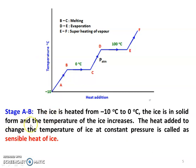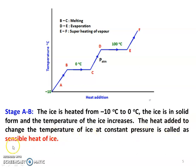Stage A to B: the ice is heated from minus 10 degrees Celsius to 0 degrees Celsius. The ice remains in solid form and its temperature increases. The heat added to change the temperature of ice at constant pressure is called the sensible heat of ice. A to B is the sensible heat of ice.